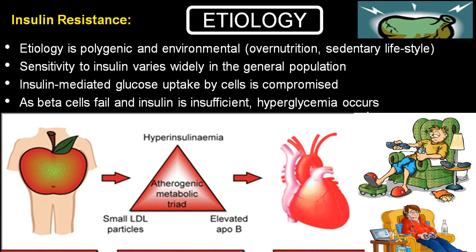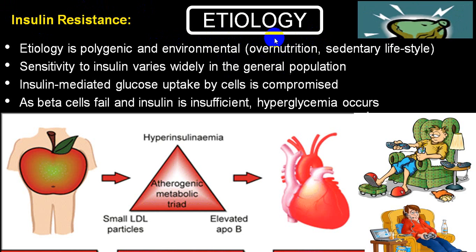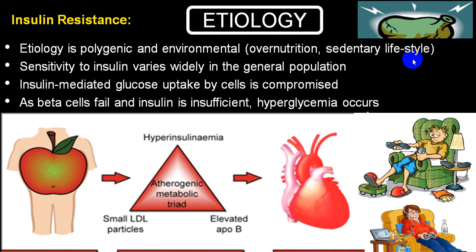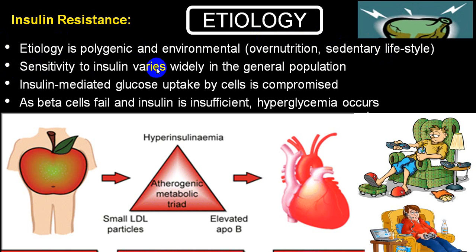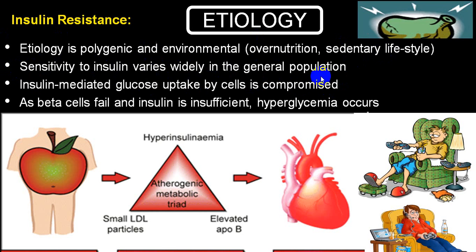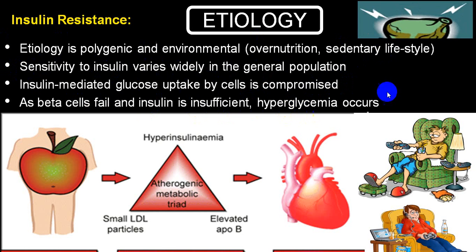As far as etiology is concerned, it is polygenic and environmental. Environmental factors mainly include over-nutrition — or dietary factors — and sedentary lifestyle. Sensitivity to insulin varies widely in the general population, and insulin-mediated glucose uptake by cells is compromised. Beta cells fail and insulin is insufficient, leading to hyperglycemia.